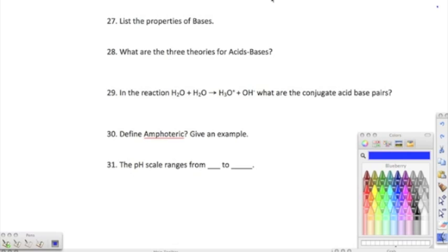Moving on to 28, it says what are the three theories for acids and bases? We have the Bronsted-Lowry definition, where acids donate hydrogen ions, bases accept hydrogen ions. They come in pairs, we have our conjugate acids and conjugate bases. We have the Arrhenius definition, where acids produce hydrogen ions, and bases produce hydroxide ions. And then our last definition is the Lewis definition, where acids accept an electron pair and bases donate an electron pair.